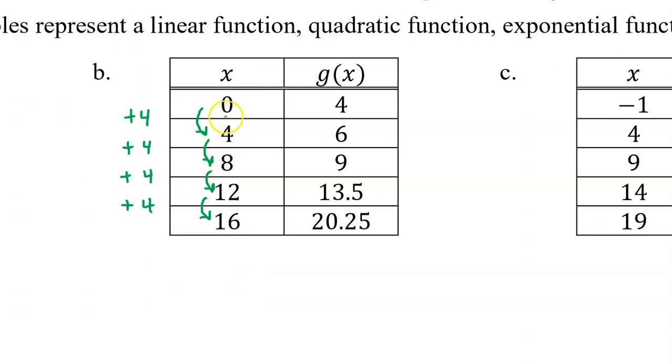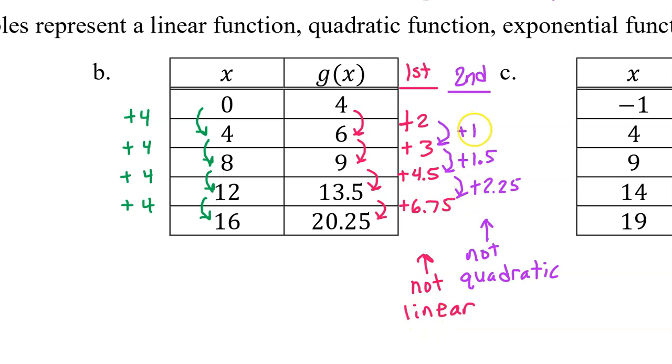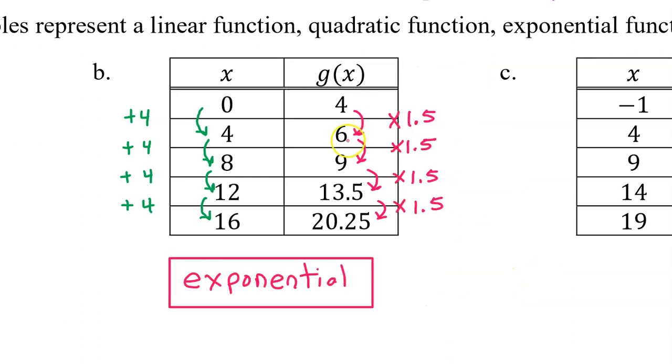For part B, we first notice that we do have equal length input value intervals. So we can now focus on the output values. Since the first differences are not constant, g(x) is not linear. Since the second differences are not constant, g(x) is not quadratic either. Dividing each term by the previous term gives 1.5 every time. Since we see a common ratio, g(x) is exponential.